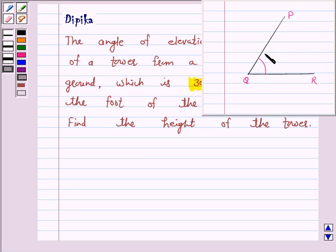Now, the angle of elevation of the point viewed is the angle formed by the line of sight with the horizontal when the point being viewed is above the horizontal level.